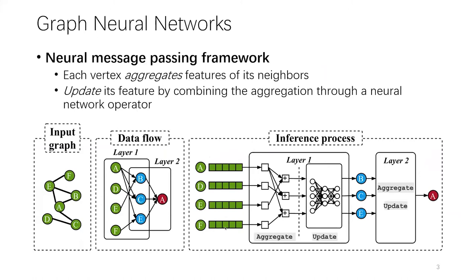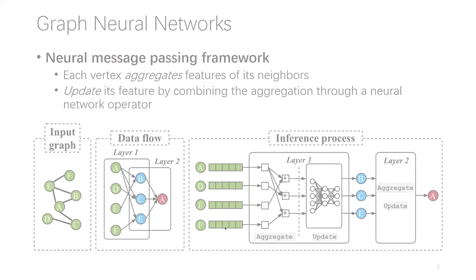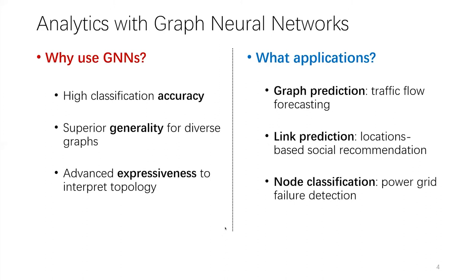To facilitate deep learning on graph data, recent advances in neural networks have extrapolated to the graph domain, resulting in a new stream of models called graph neural networks, abbreviated GNN. Its computation can be abstracted in a neural message passing framework. Specifically, for each GNN layer, a vertex aggregates features from its neighbor vertices and then updates the feature vectors through a neural network operator. Benefiting from its powerful expressiveness, GNN can achieve superior prediction performance in various graph-related tasks and has emerged as a powerful tool for real-world IoT-driven applications such as traffic flow forecasting, location-based recommendation, and power grid failure detection.